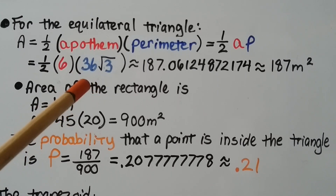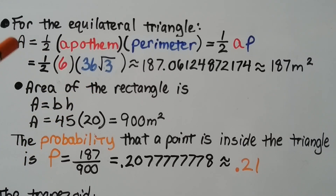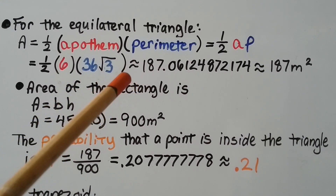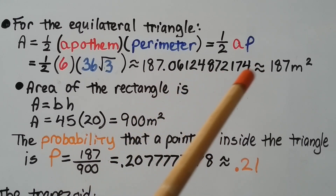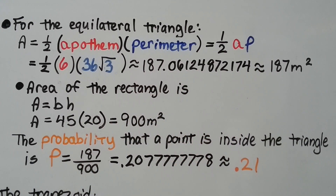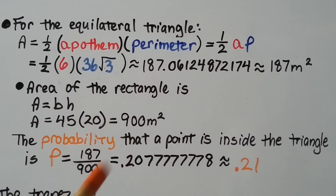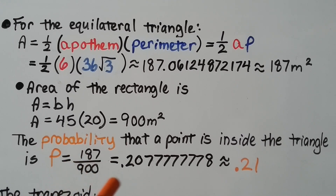Now we know the perimeter is 36√3. Using the area formula for a regular polygon: A = ½ × apothem × perimeter = ½ × 6 × 36√3, which is approximately 187 meters squared. The area of the rectangle is 45 × 20 = 900 meters squared. The probability that a point is inside the triangle is 187 over 900, which is approximately 0.21.